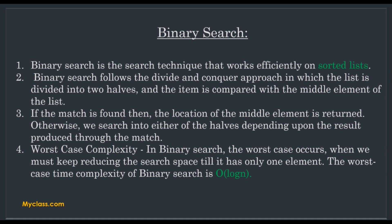Now we move to binary search. Binary search is a search technique that works efficiently on sorted lists only - it is very necessary that the list be in sorted order. Binary search follows the divide and conquer approach, in which the list is divided into two halves and the item is compared with the middle element of the list. If the match is found, the location of the middle element is returned; otherwise we search either the left or right half. The worst case complexity is O(log n).